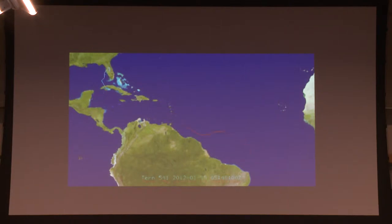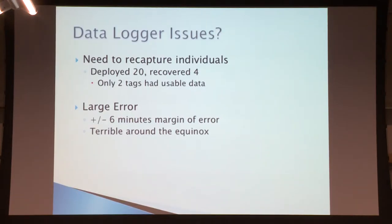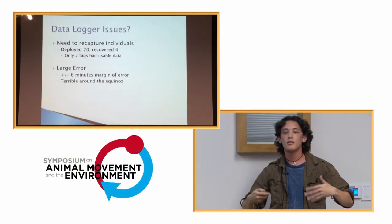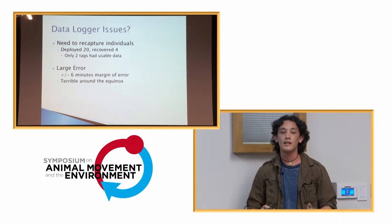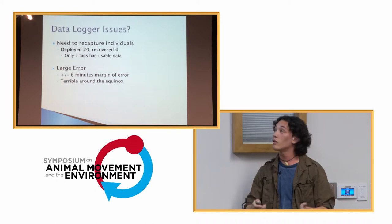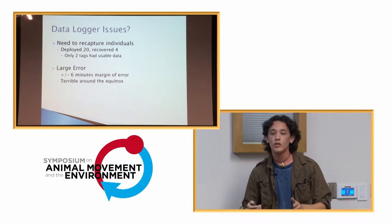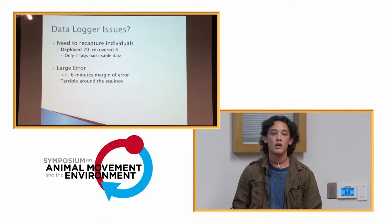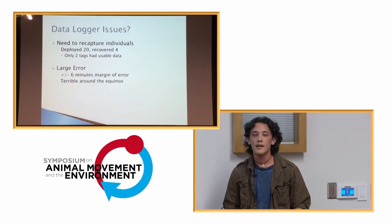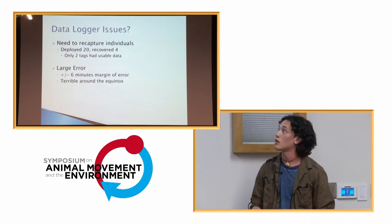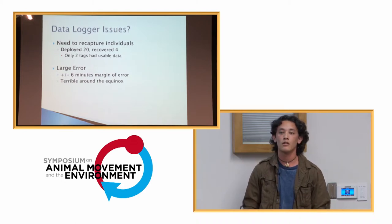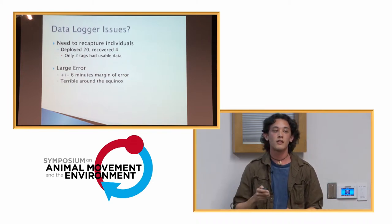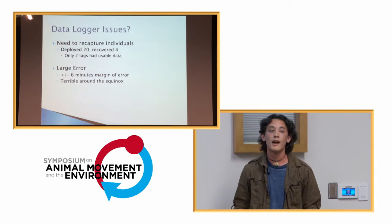There are a lot of issues with these data loggers. The first is that you actually have to recapture the individuals to obtain the data, and in a nesting colony of 75,000 birds that is a figurative needle in a haystack. We deployed 20 loggers, recovered four, of which only two had any usable data — the other two had broken prongs and the data was unrecoverable. Not only is the data really difficult to obtain, it has a lot of error. A plus or minus six minute margin of error translates into a very large latitudinal error, especially around the spring and fall equinox when all points on a given longitude experience 12 hours of daylight, so the data loggers really have no idea how far north or south you are.